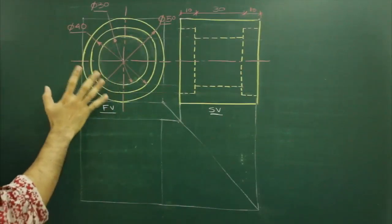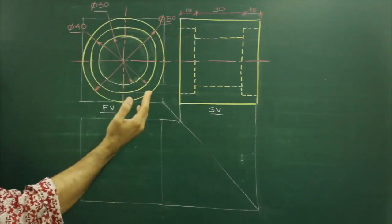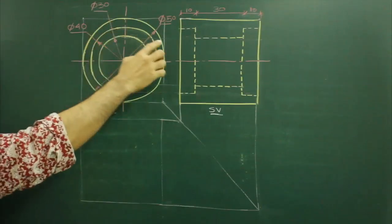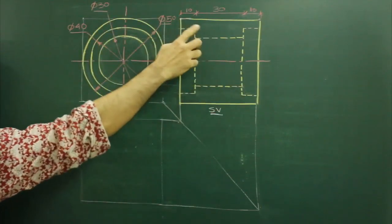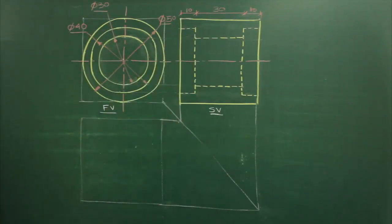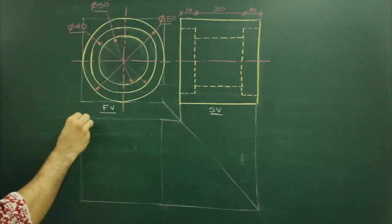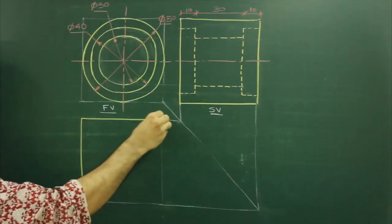So always remember, circle in one view, other two views will be the same. If you see this outer circle, vis-à-vis this, it's a rectangle. So in top view, you will get a rectangle of this outer circle. So we will draw a rectangle.